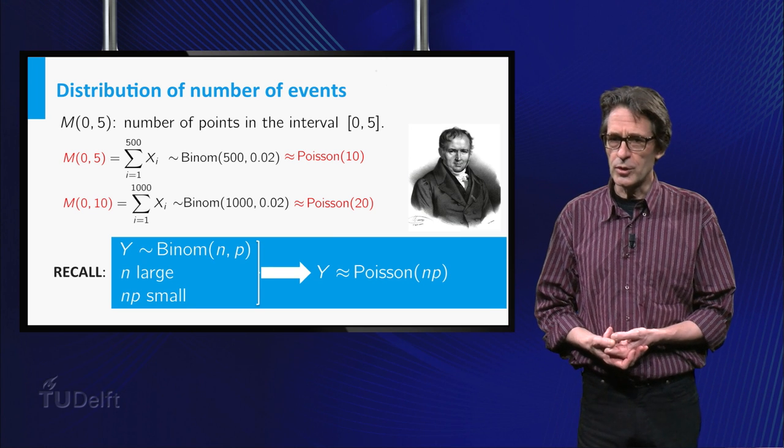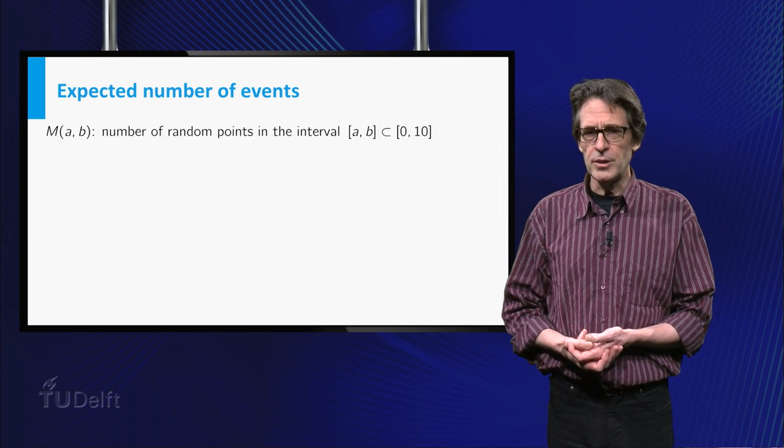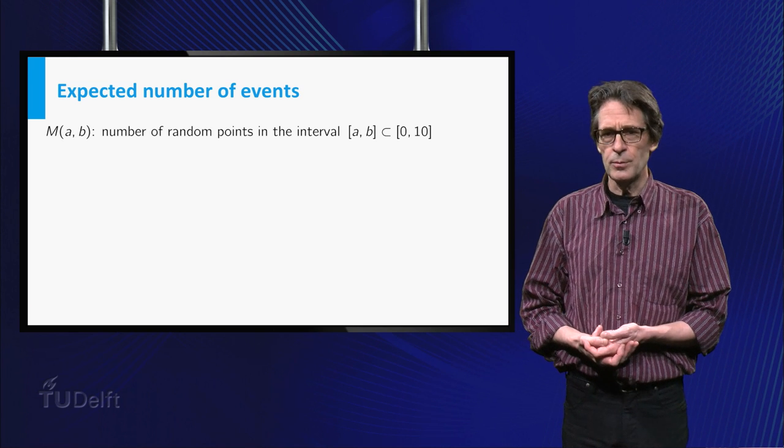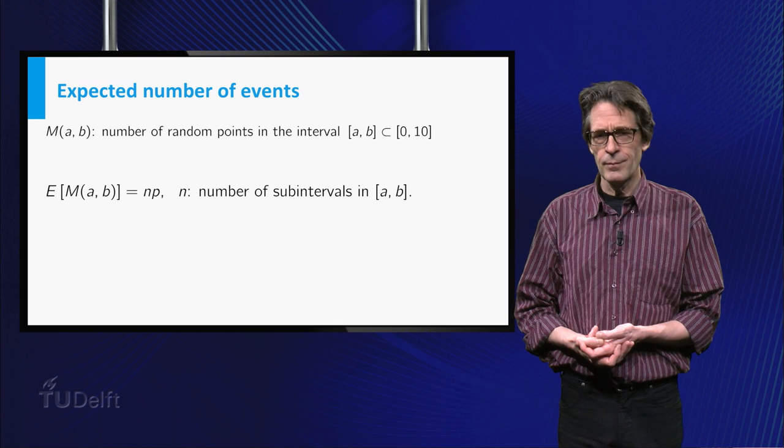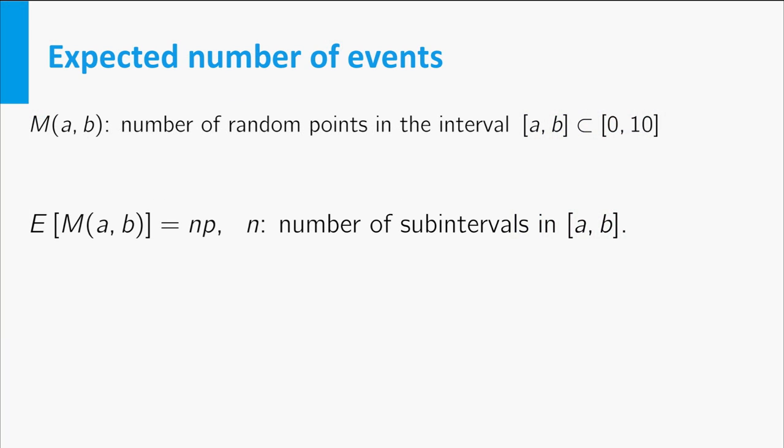For the process we are considering, the number of events in (a,b) is a random variable. We know its distribution and its expectation. Indeed the expectation equals n times p, where n is the number of subintervals of length 0.01 in (a,b).